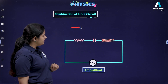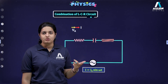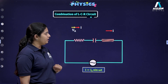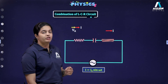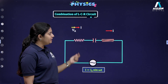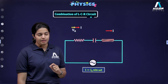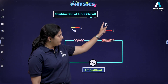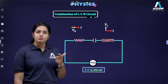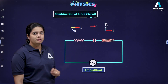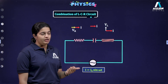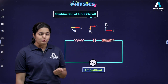For the resistor, the voltage has no phase difference with respect to current, so the phasor of VR is in the same direction as the phasor of current. For the inductor, we know that potential leads the current by 90°, so VL will be drawn 90° ahead — in the anti-clockwise direction. For the capacitor, in a pure capacitive circuit voltage lags behind the current by 90°, so VC will be drawn in the clockwise direction, that is downward.